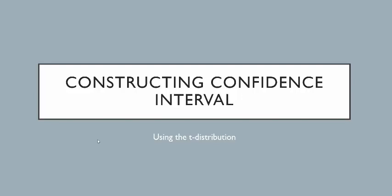Hi class. In this video I want to talk about constructing confidence intervals — specifically how we construct what's called a 1 minus alpha times 100% confidence interval for a population mean. This is going to be done using the t-distribution that we have talked about in a prior lecture.